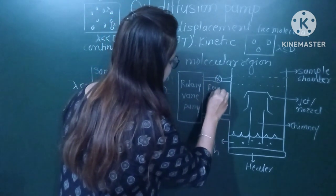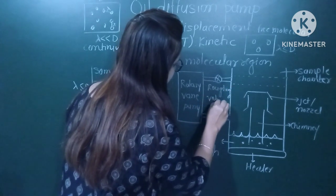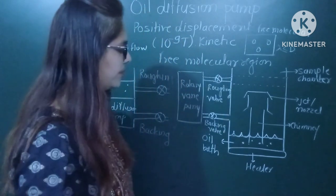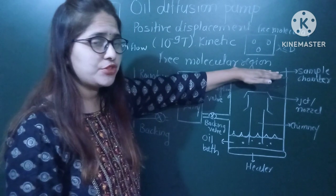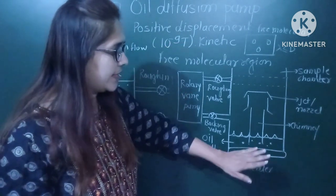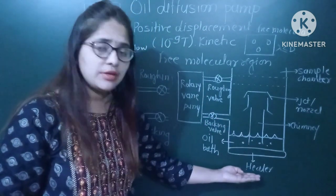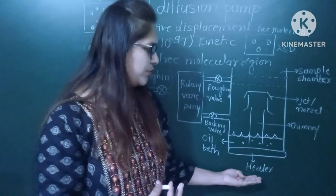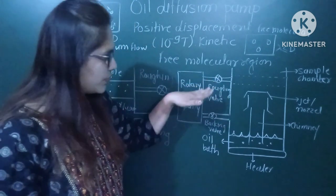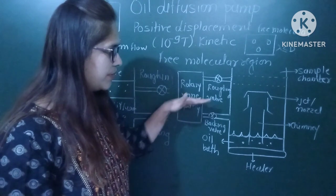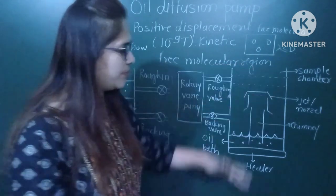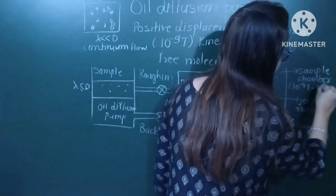This is the roughing valve and this is the backing valve. Now let's see how this works. The sample chamber is where we want to attain a vacuum of 10⁻⁹ torr. The oil diffusion pump is kinetic — air molecules are removed by supplying kinetic energy — and it is positive displacement, meaning air molecules are swiped out. For the first stage, the rotary pump serves as a roughing pump, reducing the vacuum in the sample chamber to 10⁻⁴ to 10⁻⁵ torr.